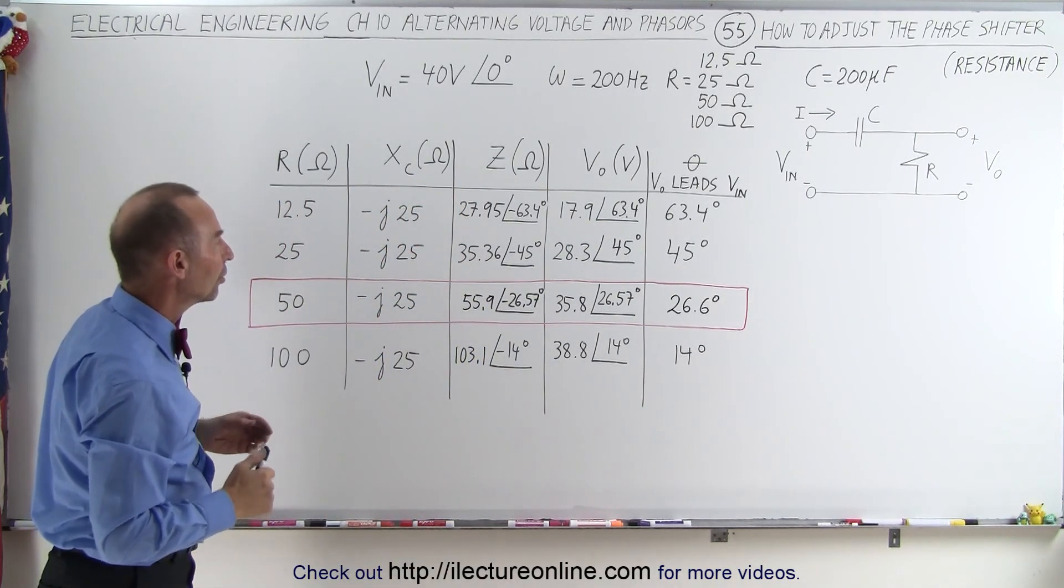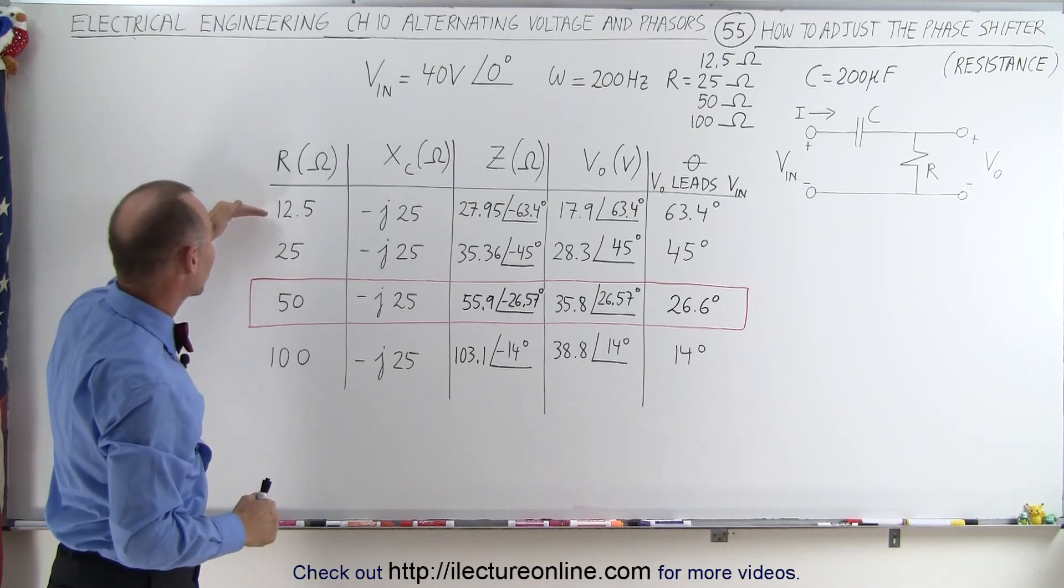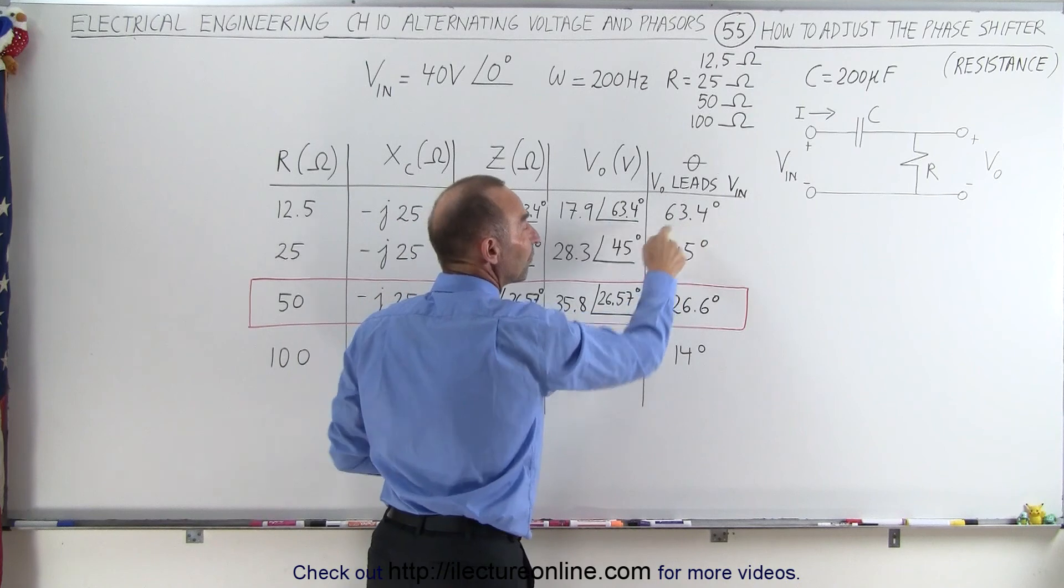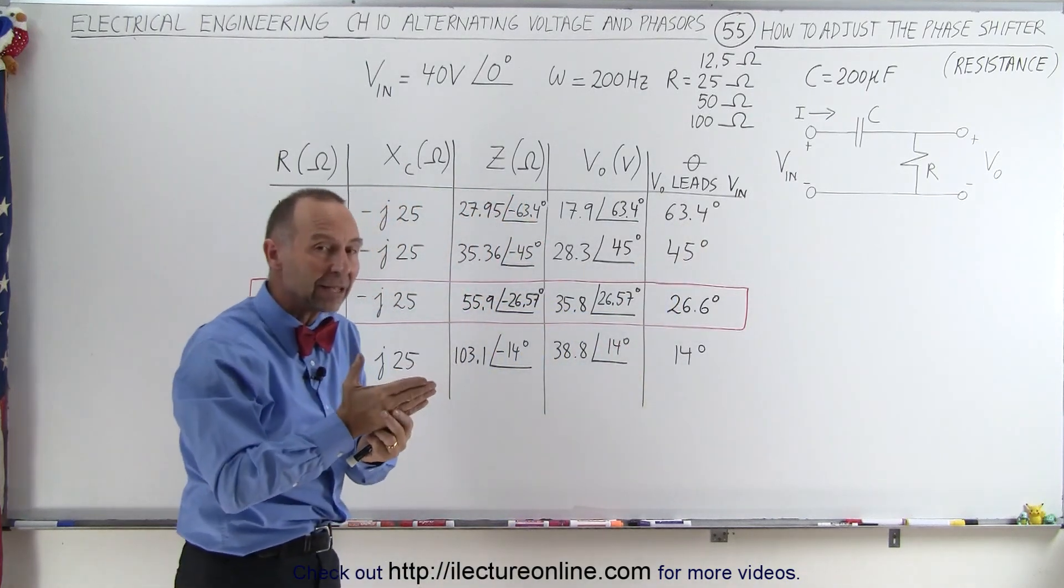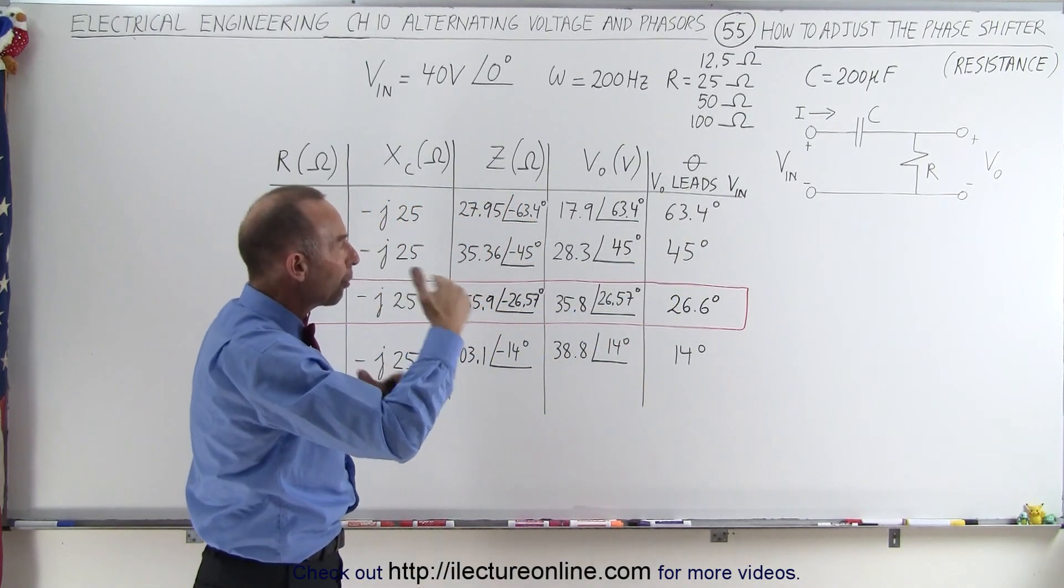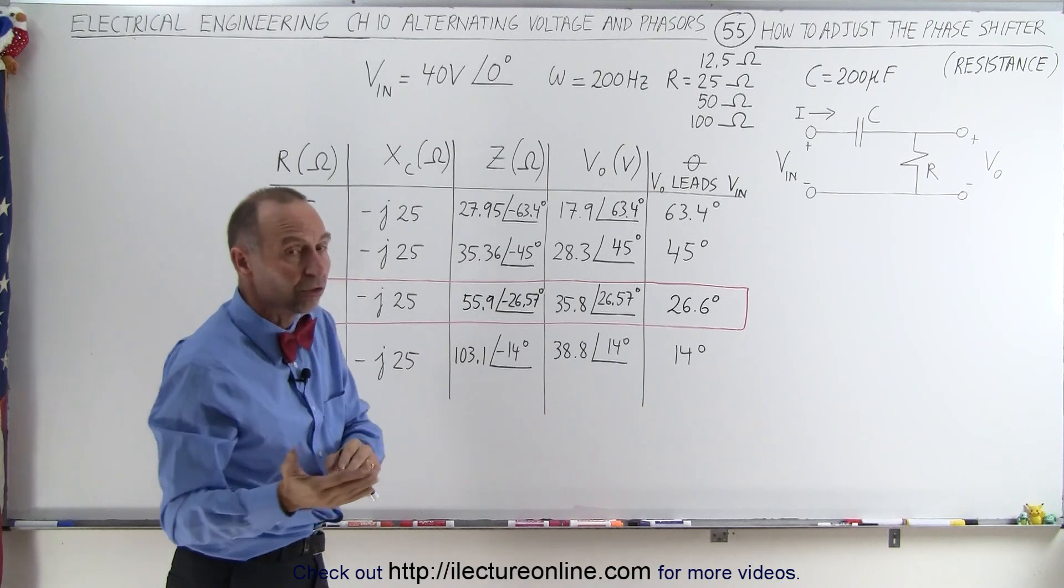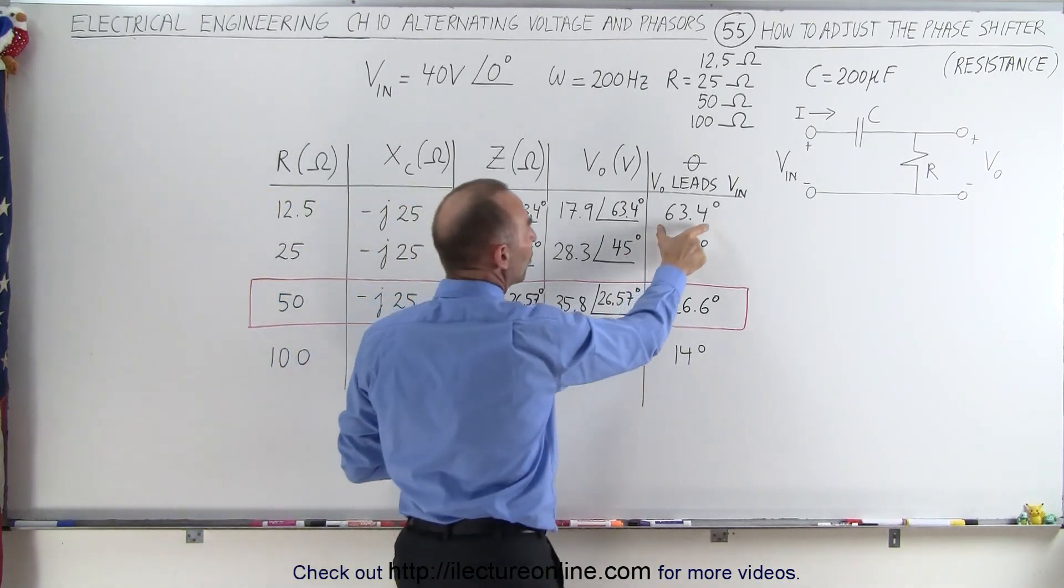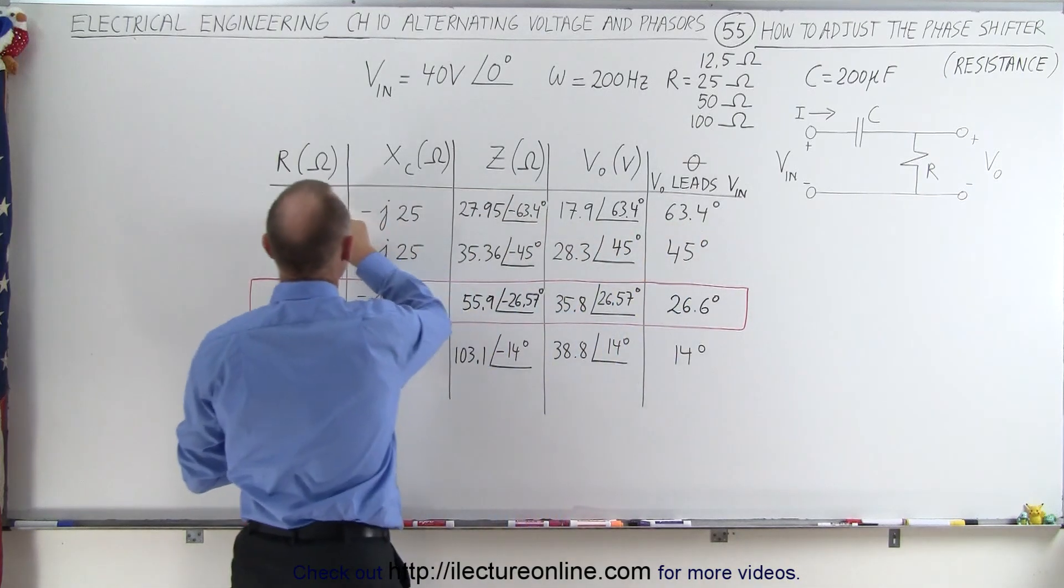So now what you can see is as the resistance becomes very small, you have a very large phase difference, because then the capacitor reactance becomes much more important in the circuit than the resistance. So much more voltage is dropped across the capacitor, so you have a much greater phase shift when we have small resistors.